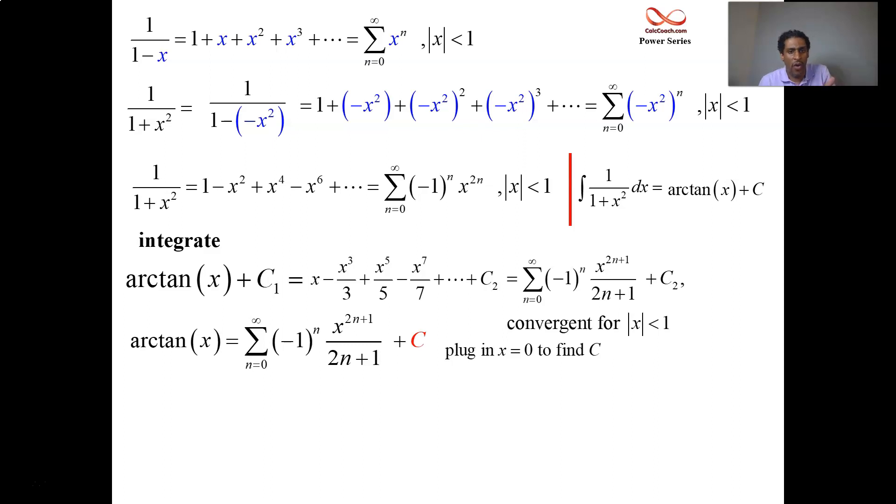Why? Because it'll kill all those terms that have x's in them. It gives you that the c is the arctan of 0. And hopefully you know the arctan of 0 is 0. So it turns out that here the constant is just 0.